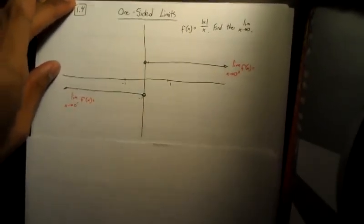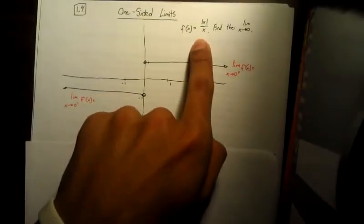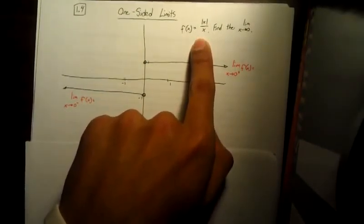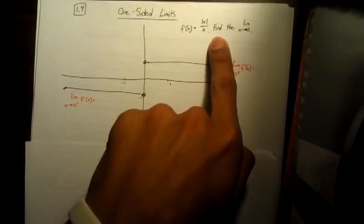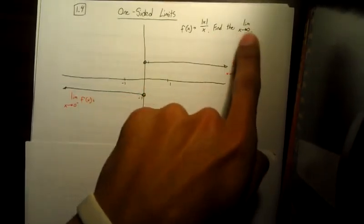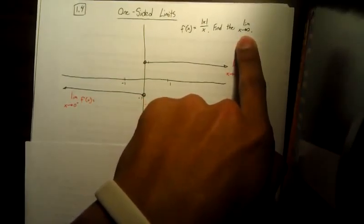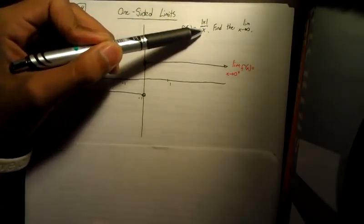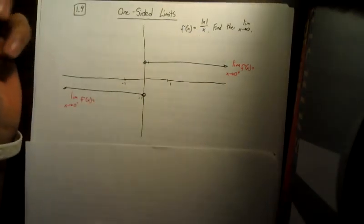Here I just have a graph set up. This is the graph of the absolute value of x divided by x, and what I'll be looking to find is the limit as x approaches zero. As you can see, there's a discontinuity at x equals zero because of this x in the denominator and not being able to cancel anything out from the numerator.